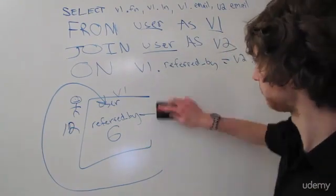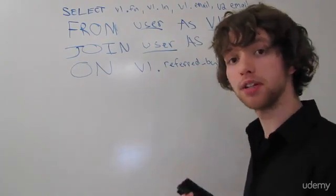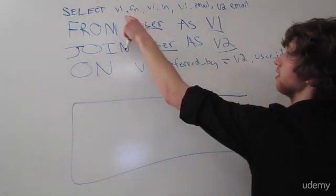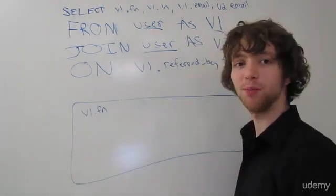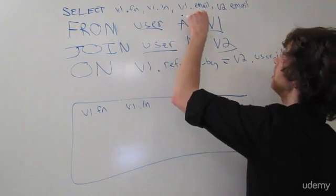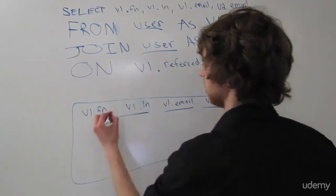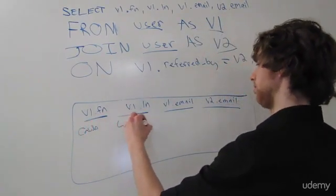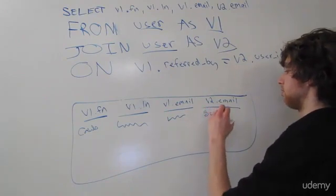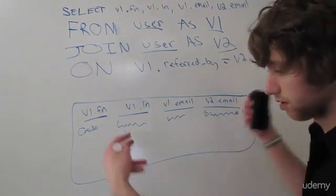When you take this query as it is and put it in your database, you will get something that looks like a normal joined table. It will be one big table and it will have the columns that we selected — V1 first name, V1 last name, V1 email, and V2 email. If we were to put example data into this, it would look something like Caleb, Curry, an email, and then the V2 email would be like another person's email. That's what it would look like, and it would just give you all of the rows.